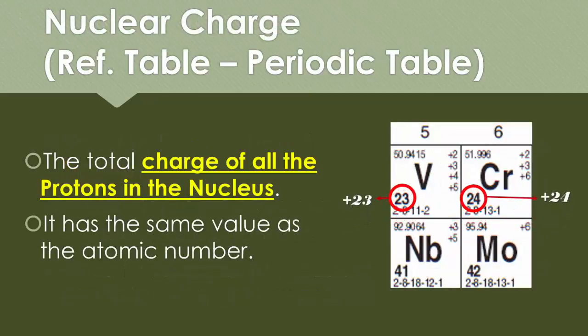So atomic number and nuclear charge are actually the same thing. The nuclear charge is the same amount of protons in a nucleus. So if we look at these examples, vanadium, atomic number 23, has a nuclear charge of 23. While chromium, with atomic number 24, has a nuclear charge of 24. Any atomic number is the nuclear charge of that element. And if you think about nuclear charge, what has a charge inside the nucleus? Protons.